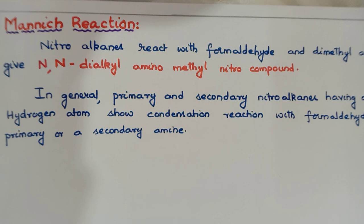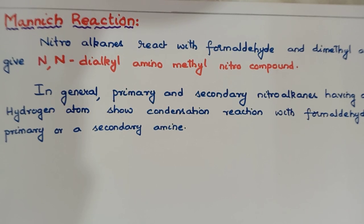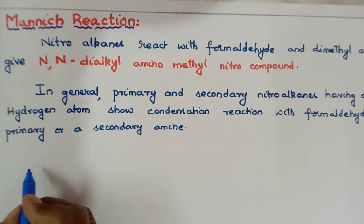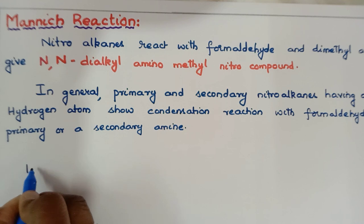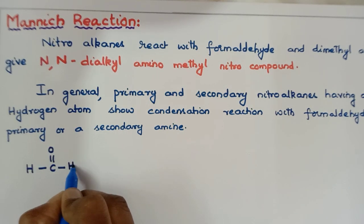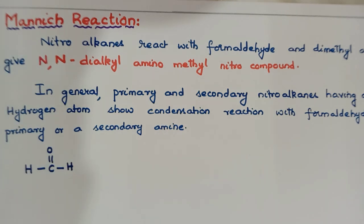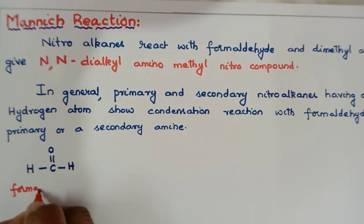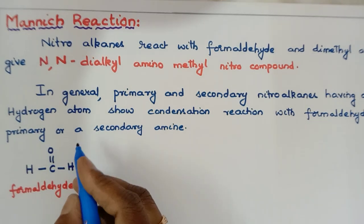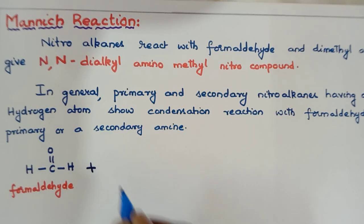I am going to show you the reaction between formaldehyde, dimethylamine, and a nitroalkane. I will start with formaldehyde. The formula of formaldehyde is HCHO, which can be written as HC double bond O. I am writing formaldehyde here, plus the compound with which formaldehyde is reacting — dimethylamine.